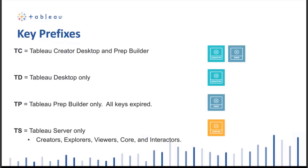TD is for Tableau Desktop only — these are the older style keys that we have issued in past years. TP is for Tableau Prep Builder; these keys have expired and are no longer available. And if you have a Tableau Server key, it will start with the letters TS.